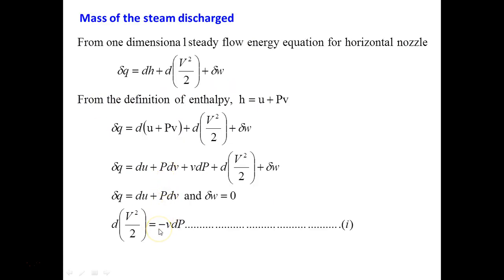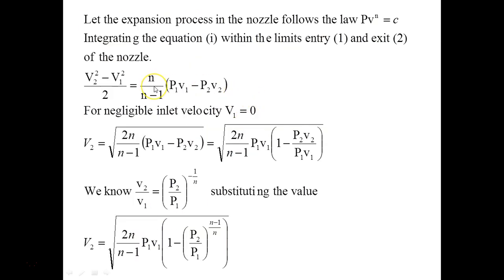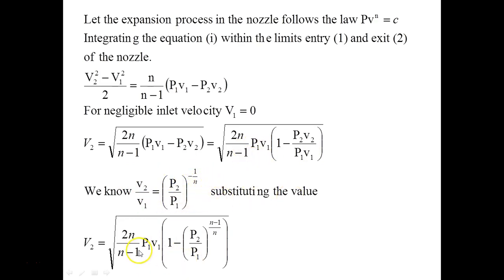Integrating Equation 1 from inlet to exit with PVⁿ = constant and negligible inlet velocity V₁ = 0, we get: V₂ = √(2n/(n−1) · P₁V₁ · [1 − (P₂/P₁)^((n−1)/n)]). Taking P₁V₁ outside and using the polytropic relation V₂/V₁ = (P₁/P₂)^(1/n), this simplifies to: V₂ = √(2n/(n−1) · P₁V₁ · [1 − (P₂/P₁)^((n−1)/n)]).